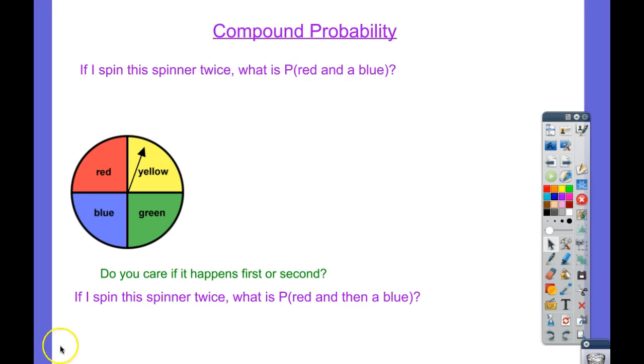So if you were thinking of it as we were looking at it last time with the or probabilities, you might think, okay, red, that's a one out of four chance. And blue, that's a one out of four chance. So maybe to get a red and a blue, then I can add them together like I was before and that's a one half chance.